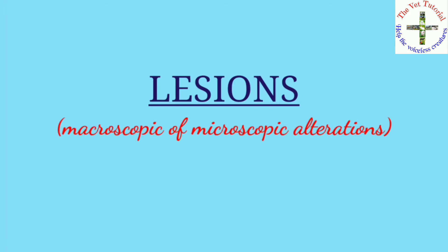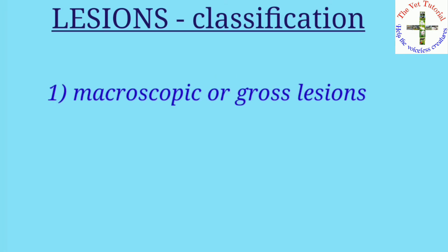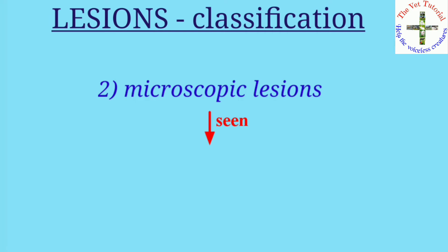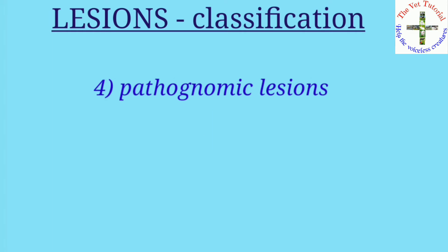Lesions are macroscopic or microscopic alterations occurring in tissue, cell, organ, or body as a result of injury. They are classified into four types: first, macroscopic or gross lesions, which can be seen by the naked eye; second, microscopic lesions, seen by the microscope; third, ultra-microscopic lesions, which can be seen only at the cellular level with the help of an electron microscope.